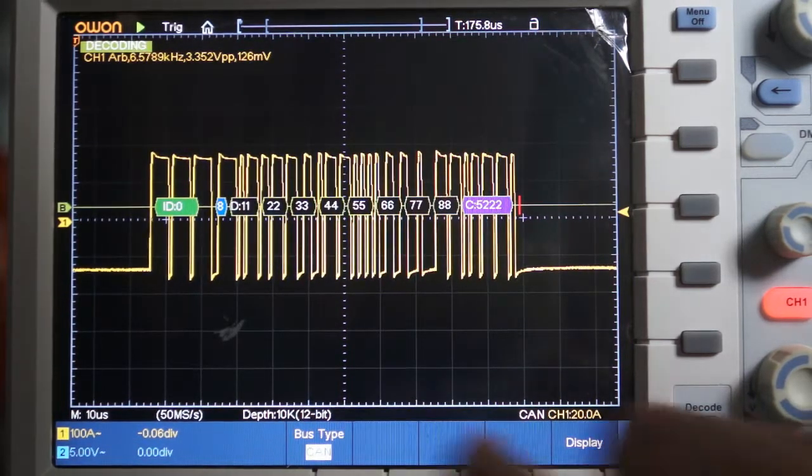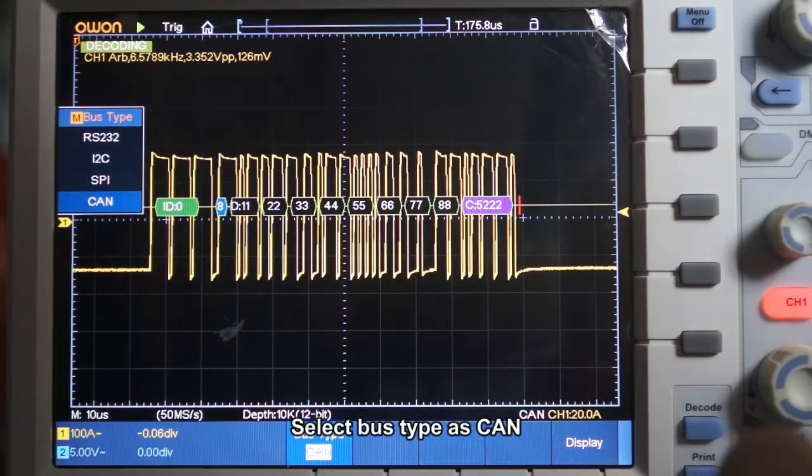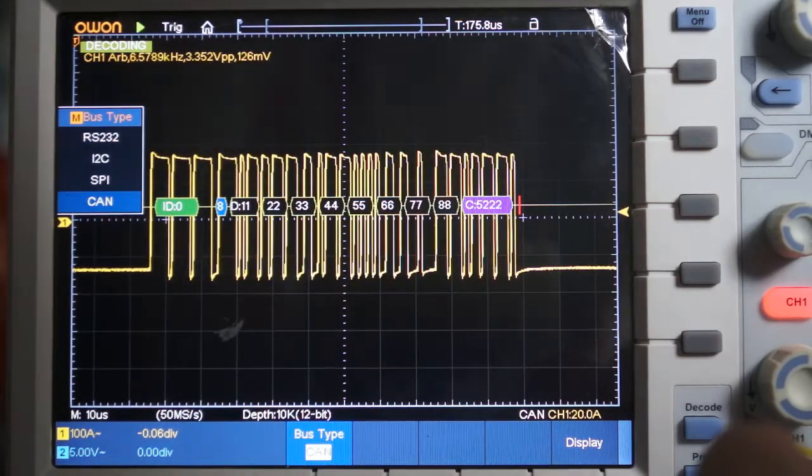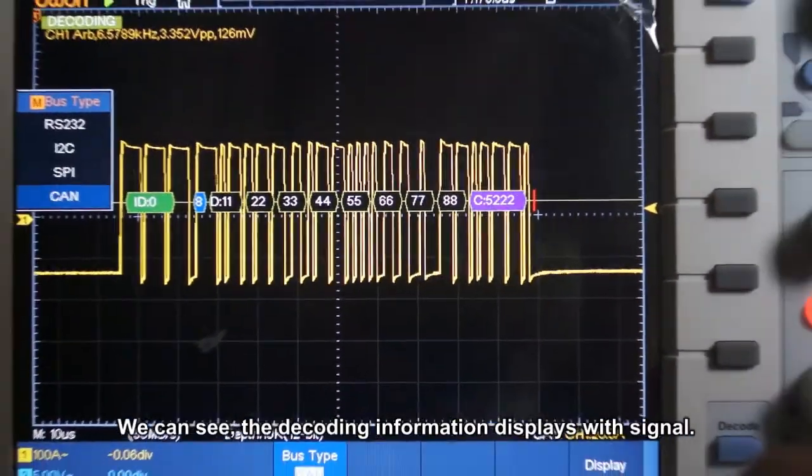We begin to decode. Select bus type as CAN. We can see the decoding information displayed with signal.